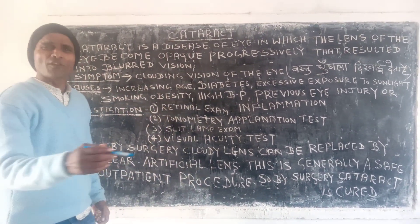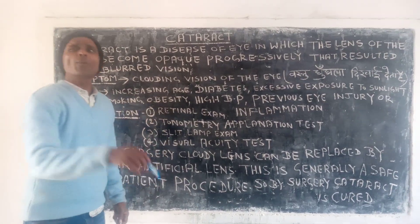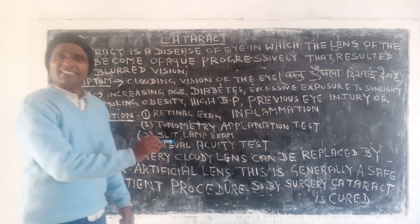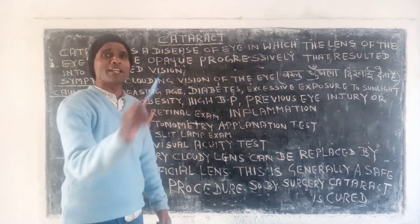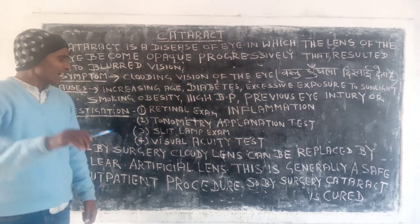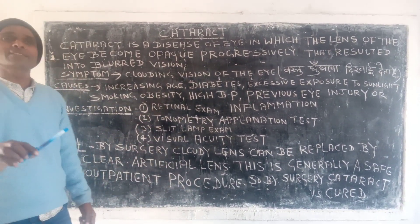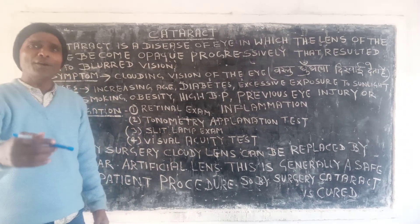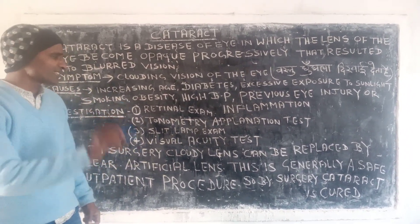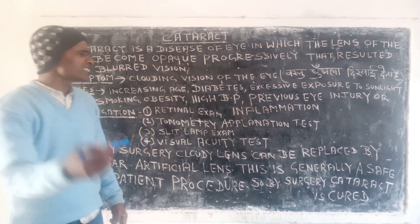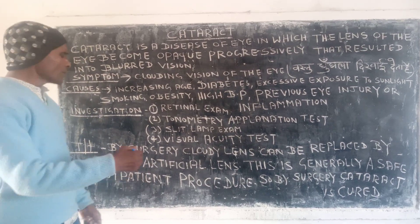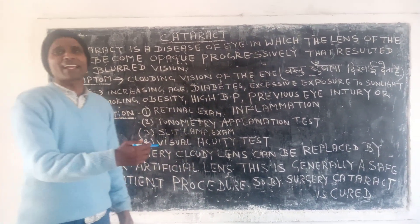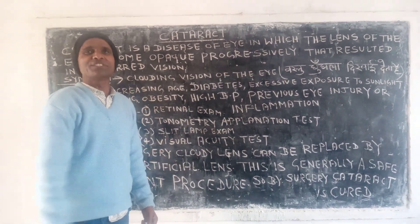For the treatment of cataract, surgery is performed. By surgery, the cloudy lens can be replaced by a clear artificial lens. This is generally a safe outpatient procedure. By surgery, cataract can be cured. Thank you.